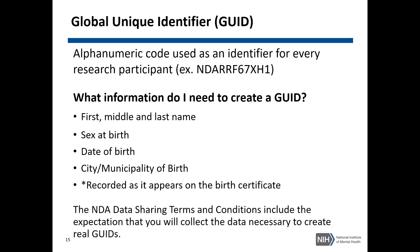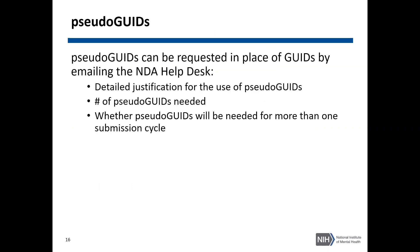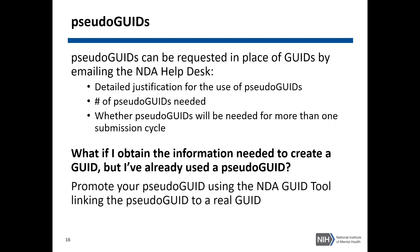The NDA data sharing terms and conditions include the expectation that you will collect the data necessary to create real GUIDs. However, if you do not have the information to create a real GUID or you are unable to obtain that information from the participant, pseudoguids can be requested in place of GUIDs. To request pseudoguids, please have the PI provide the NDA Help Desk a detailed justification for the use of pseudoguids, the number of pseudoguids needed, and whether pseudoguids will be needed for more than one submission cycle. If at a later time you obtain the information to create a real GUID but you've already used a pseudoguid, you can use the NDA GUID tool to promote your pseudoguid to a real GUID, linking the pseudoguid you previously submitted to the newly created GUID.